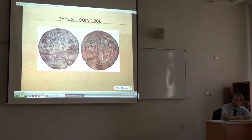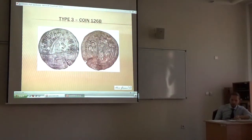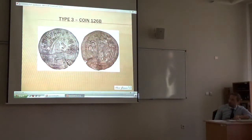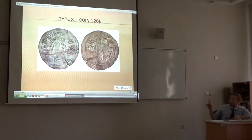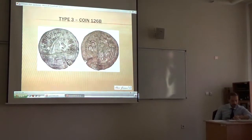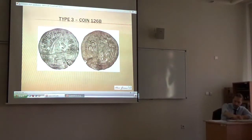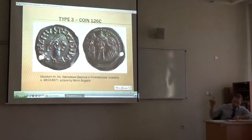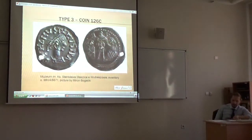The second one comes from a private collector and seems to be in the name of Justin I. This coin was probably found in Hungary. Then, thanks to Professor Gurush, a new coin was shown to me, and this one is in the name of Anastasius and has a beautiful reverse.